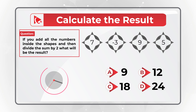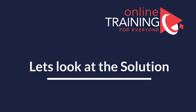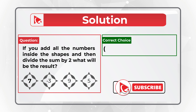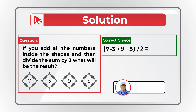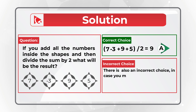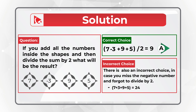Here's an amazing question testing your business math skills. You're presented with a set of numbers in a compass-like figure. Add up all the numbers inside the shapes, then divide the sum by 2. Choices: A) 9, B) 12, C) 18, D) 24. The math is straightforward: (7 − 3 + 9 + 5) divided by 2. The result is 18 divided by 2, which equals 9.